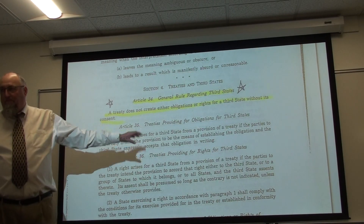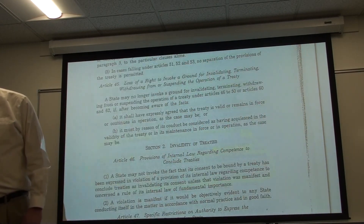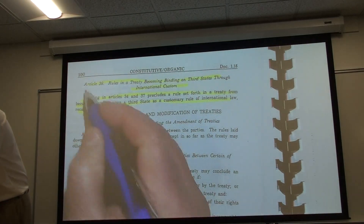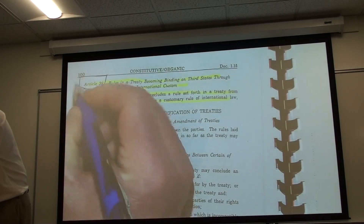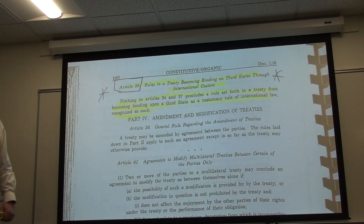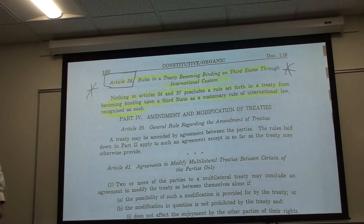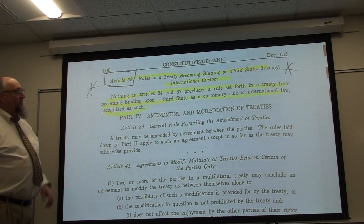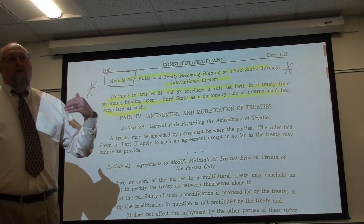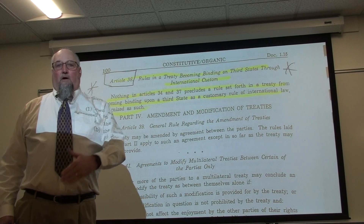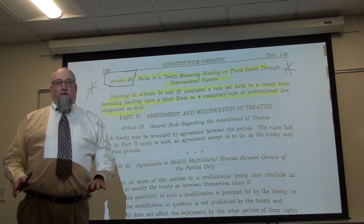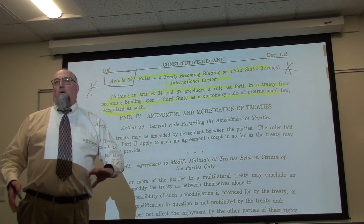However, there are exceptions to Article 34, and this is where it gets interesting. Recall Article 38 of the International Court of Justice Statute — which sets forth the sources of law the court will apply: conventions and treaties, international custom, general principles, judicial decisions, and academic writings. Treaty law is listed as the highest form of international law.